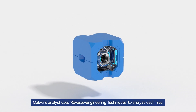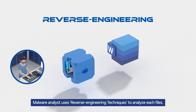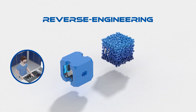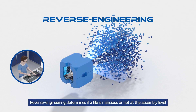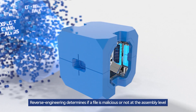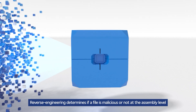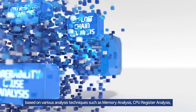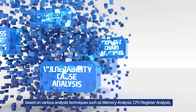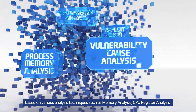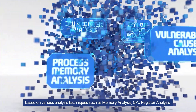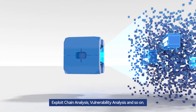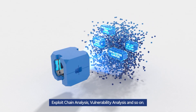Malware analysts use reverse engineering techniques to analyze each file. Reverse engineering determines if a file is malicious or not at the assembly level, based on various analysis techniques such as memory analysis, CPU register analysis, exploit chain analysis, vulnerability analysis, and so on.